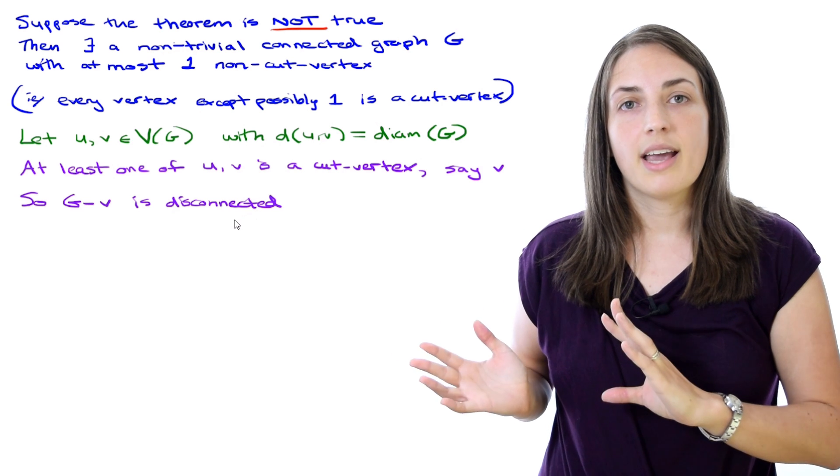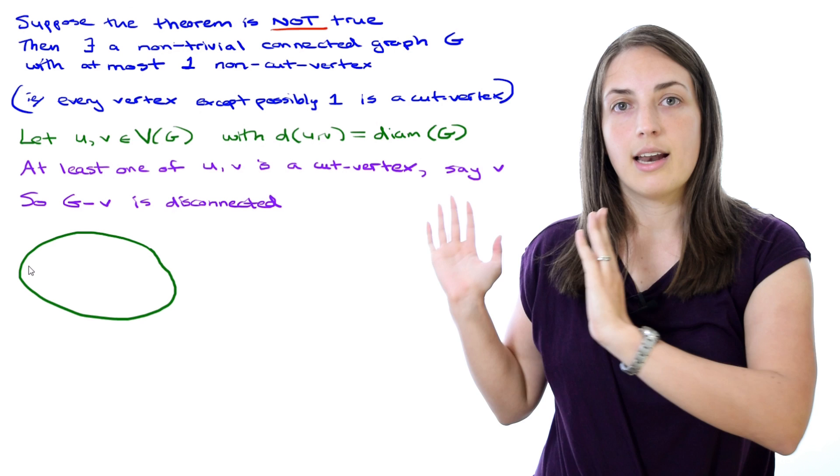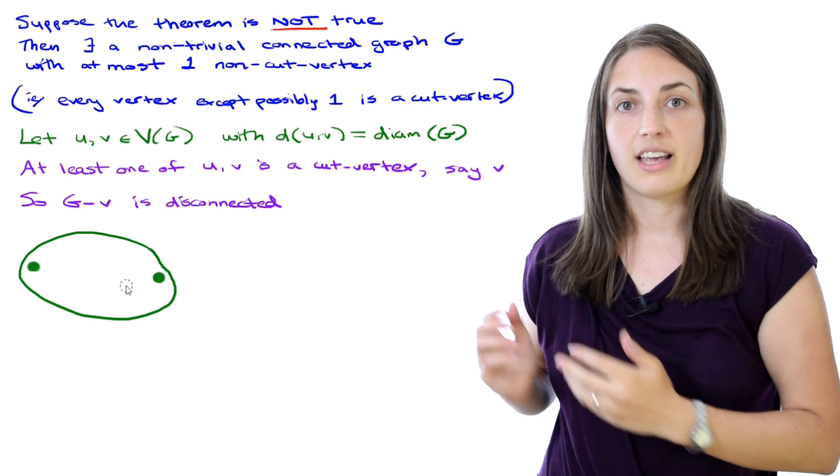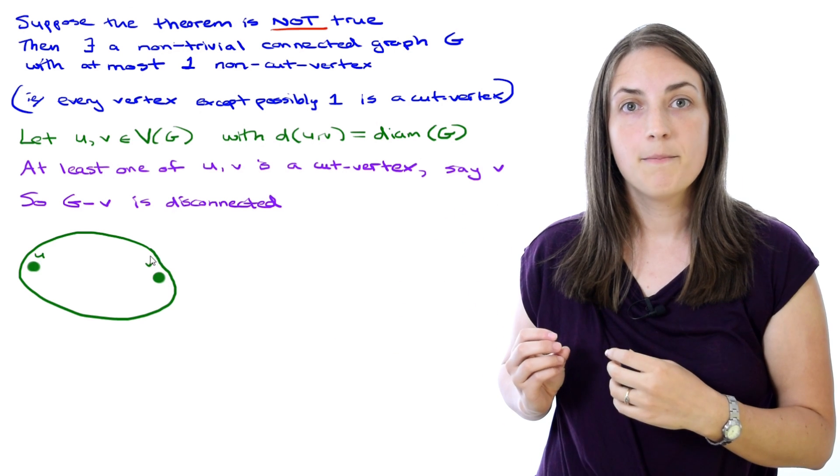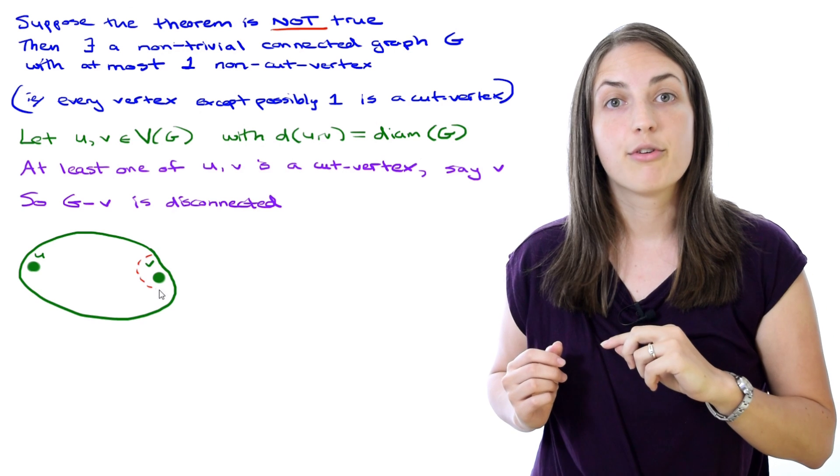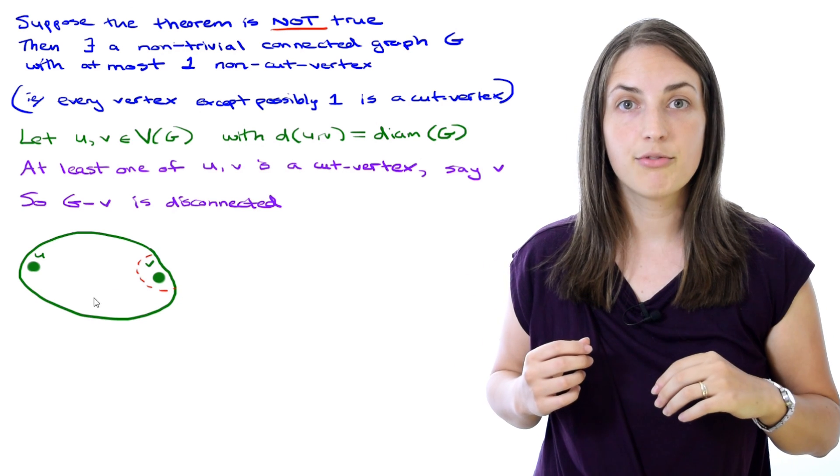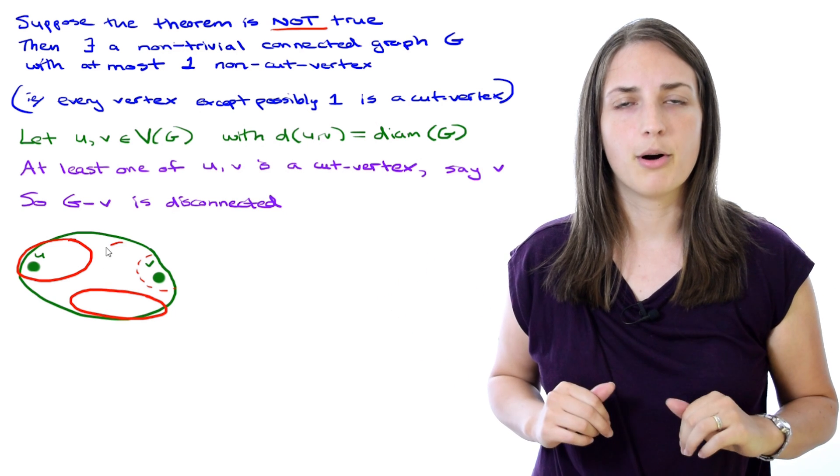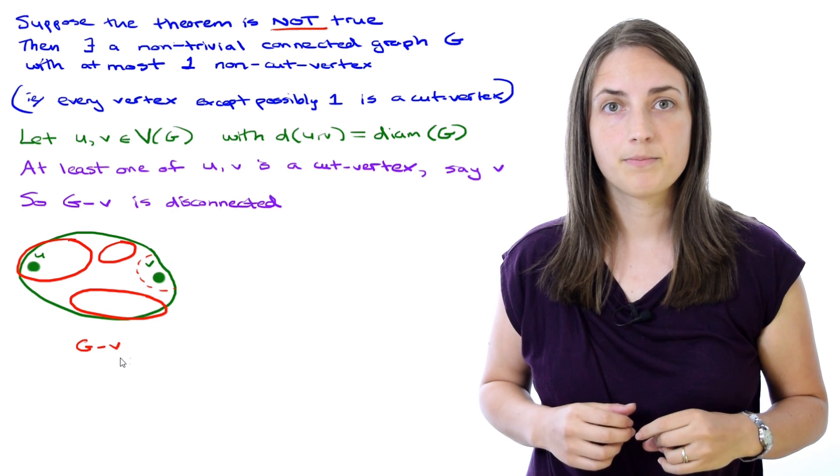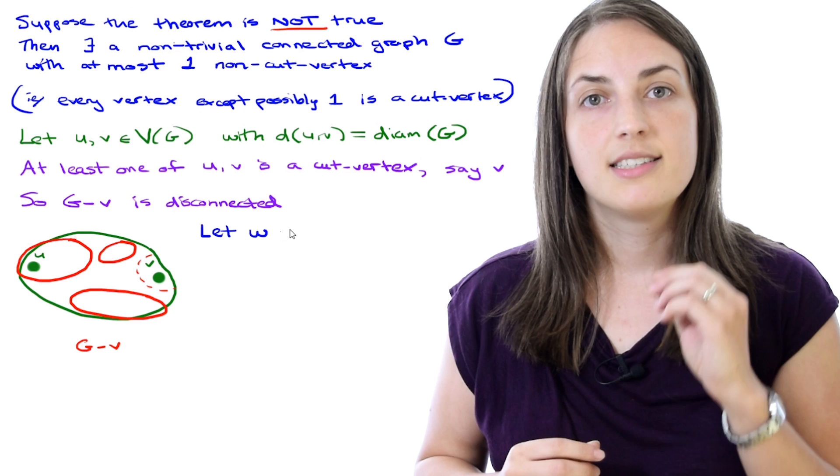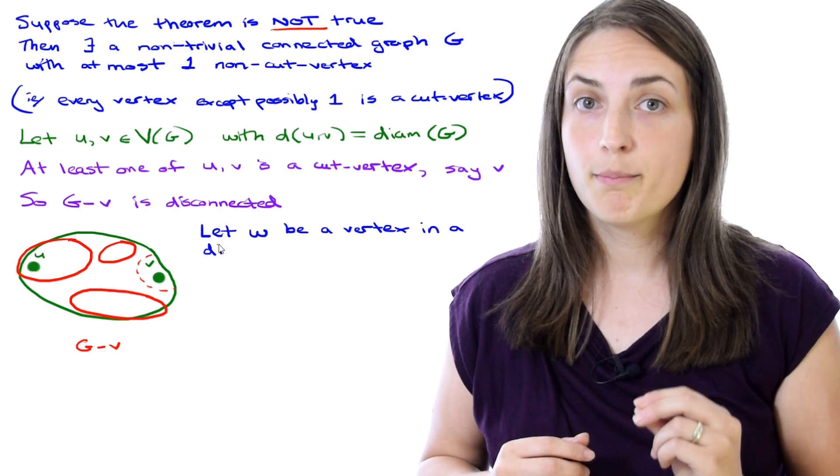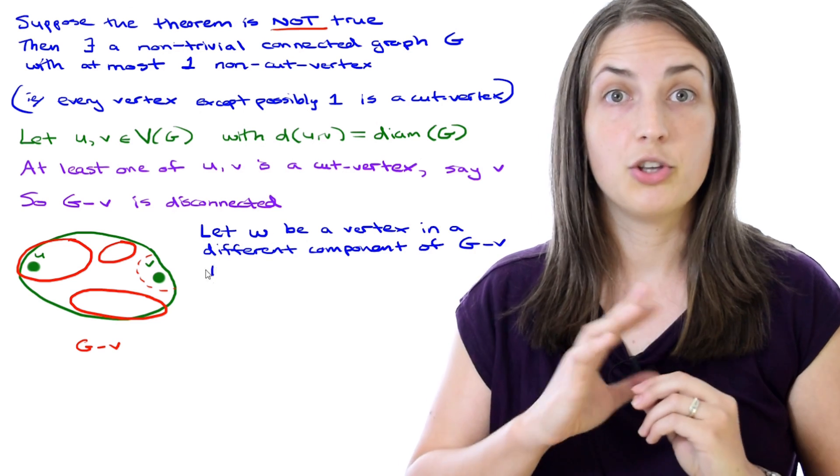Well, let's just think about what we have. We've got our graph and on one side we have u, and on the other side far away we have v. We know that if we remove that vertex v, we've disconnected the graph. So I'll draw some red blobs to be the components of G minus v, and I'll take a vertex w to be in one of the components of G minus v where u is not.